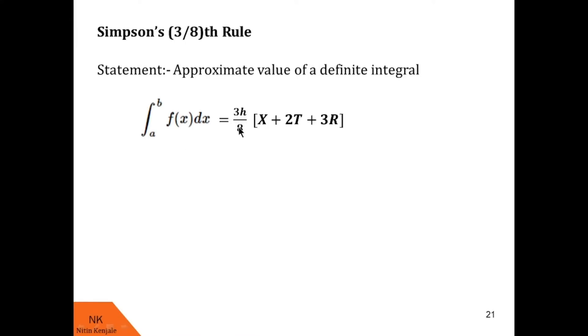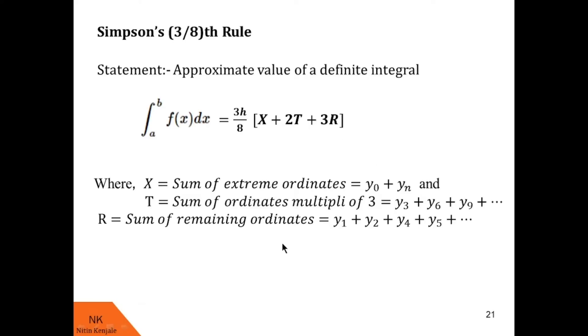is given by 3h by 8 into x plus 2t plus 3r where x is sum of extreme ordinates that is y0 plus yn, t is sum of ordinates which are multiples of 3 that is y3 plus y6 plus y9 and so on, and r is sum of remaining ordinates that is y1 plus y2 plus y4 plus y5 and so on, and h is length of every sub-interval.